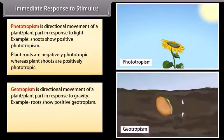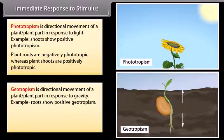Geotropism is the directional movement of a plant or plant part in response to gravity.